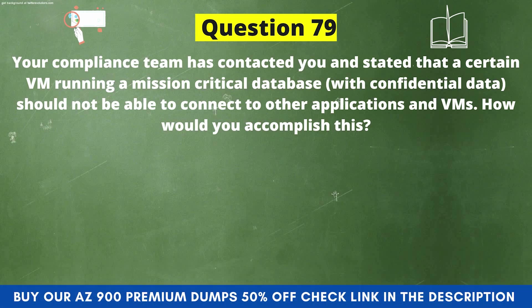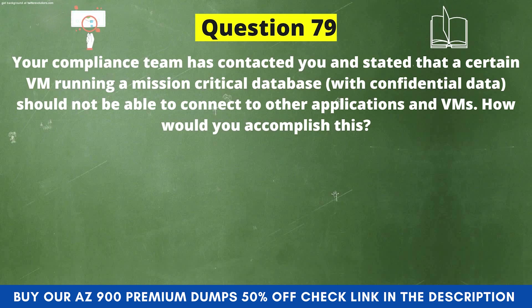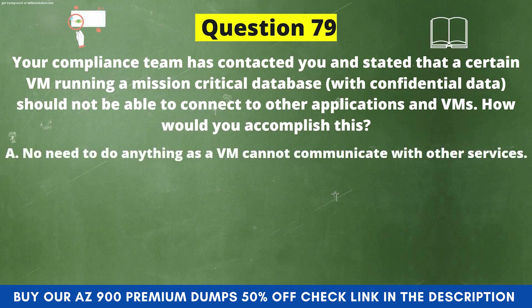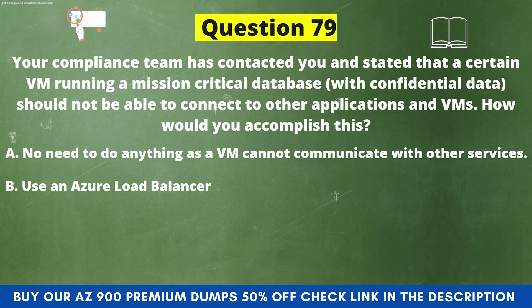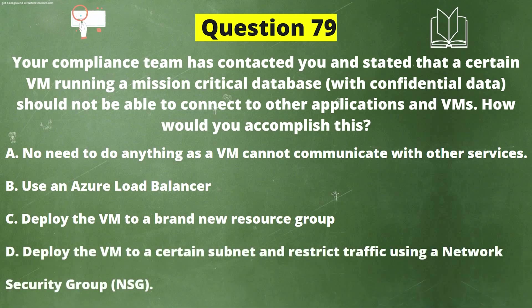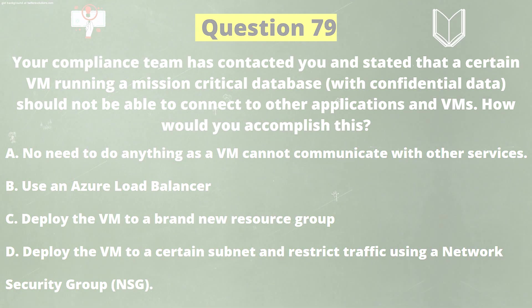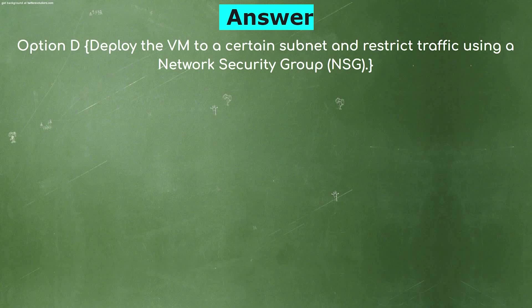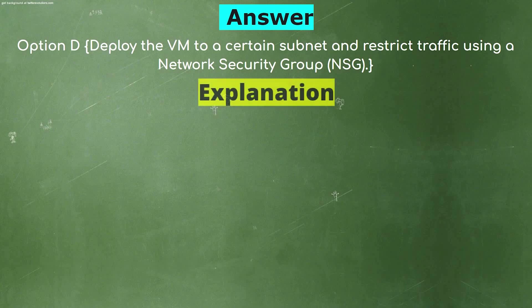Next question: Your compliance team has stated that a certain VM running a mission-critical database with confidential data should not be able to connect to other applications and VMs. How would you accomplish this? Option A: No need to do anything, as a VM cannot communicate with other services. Option B: Use an Azure Load Balancer. Option C: Deploy the VM to a brand new resource group. Option D: Deploy the VM to a certain subnet and restrict traffic using a Network Security Group (NSG). The correct answer is Option D.